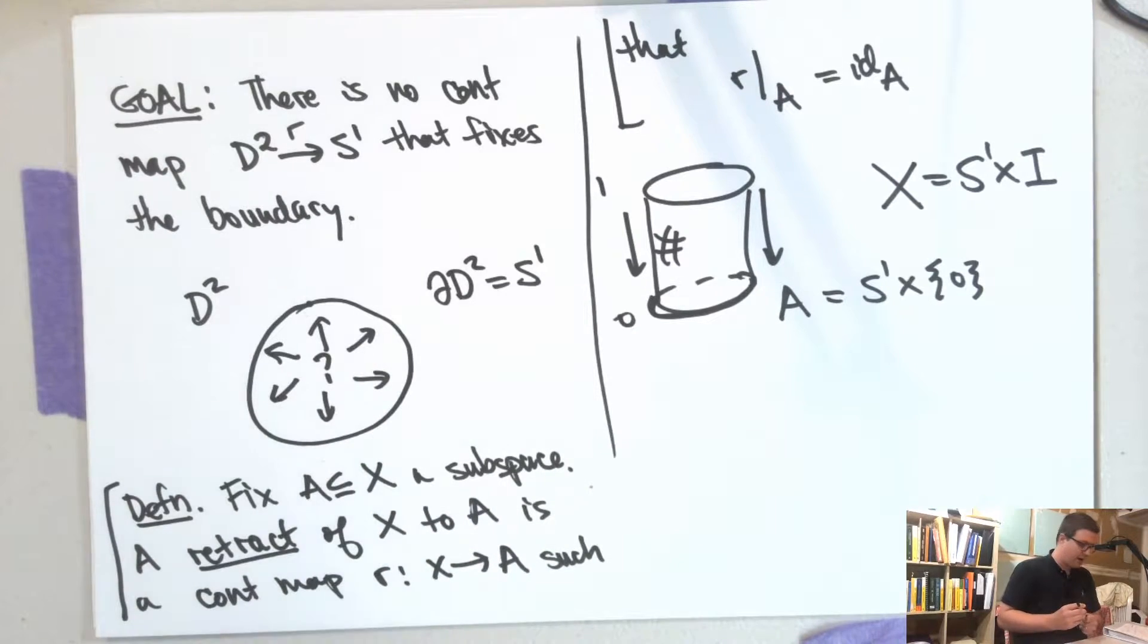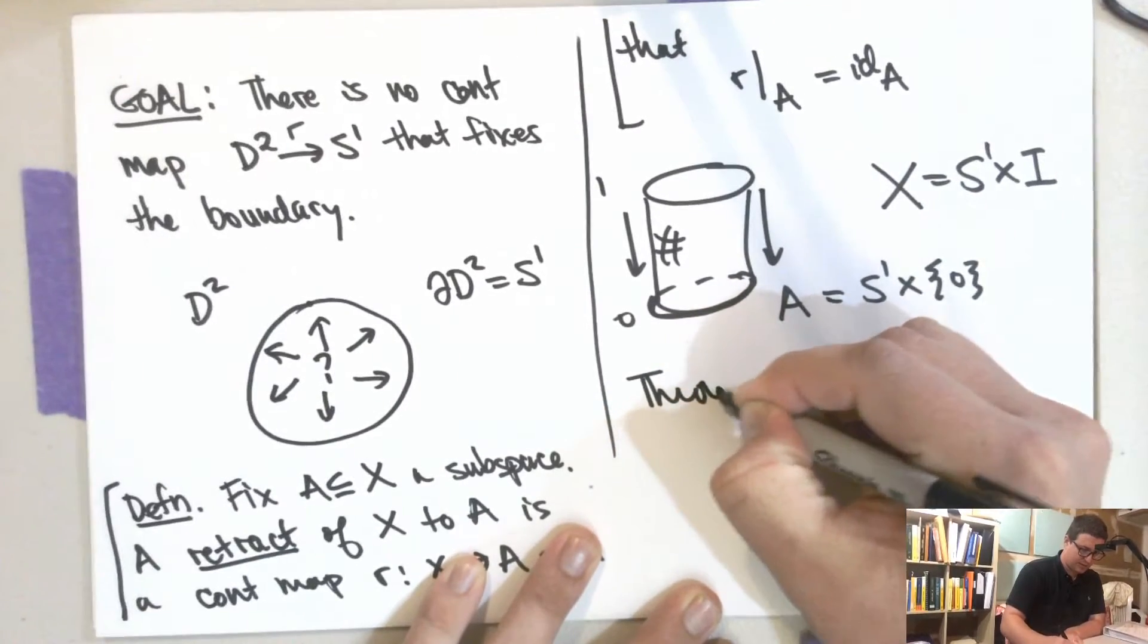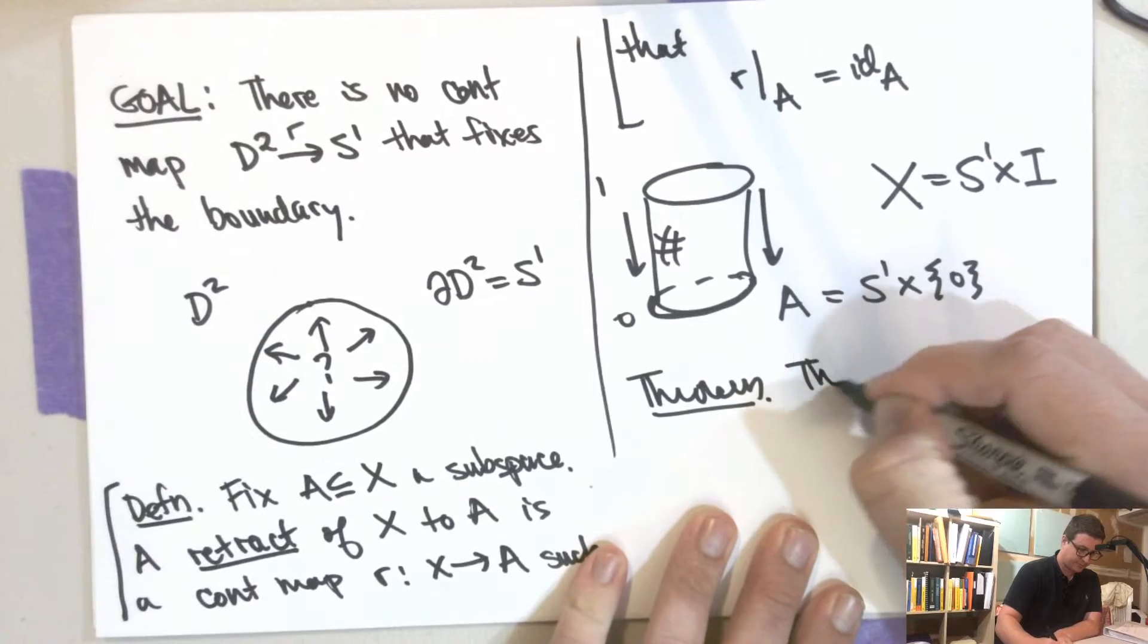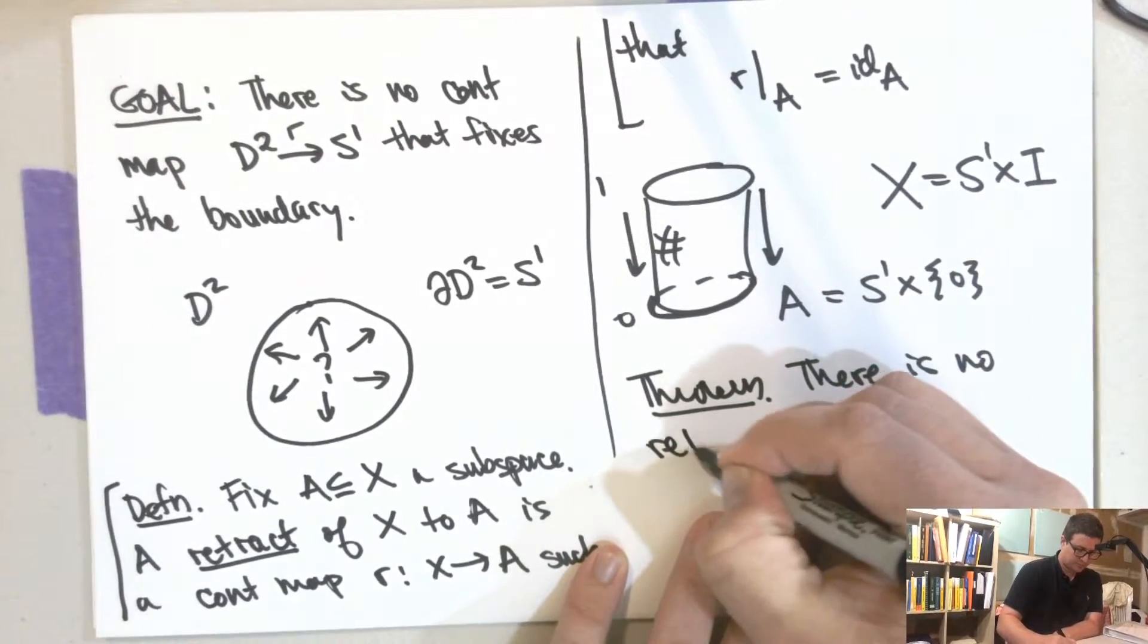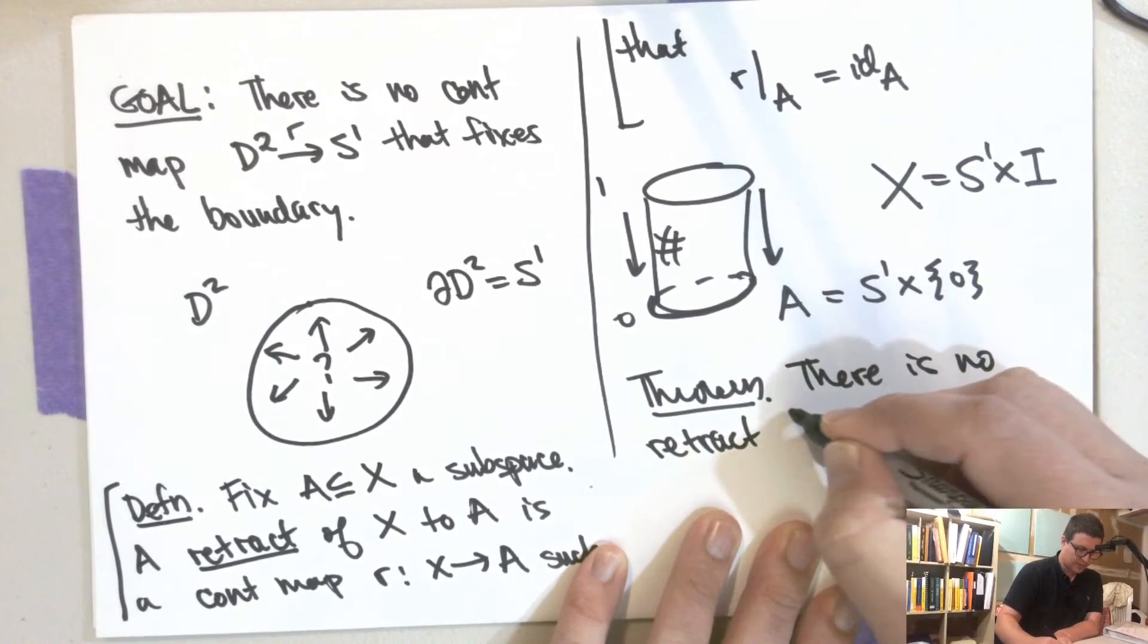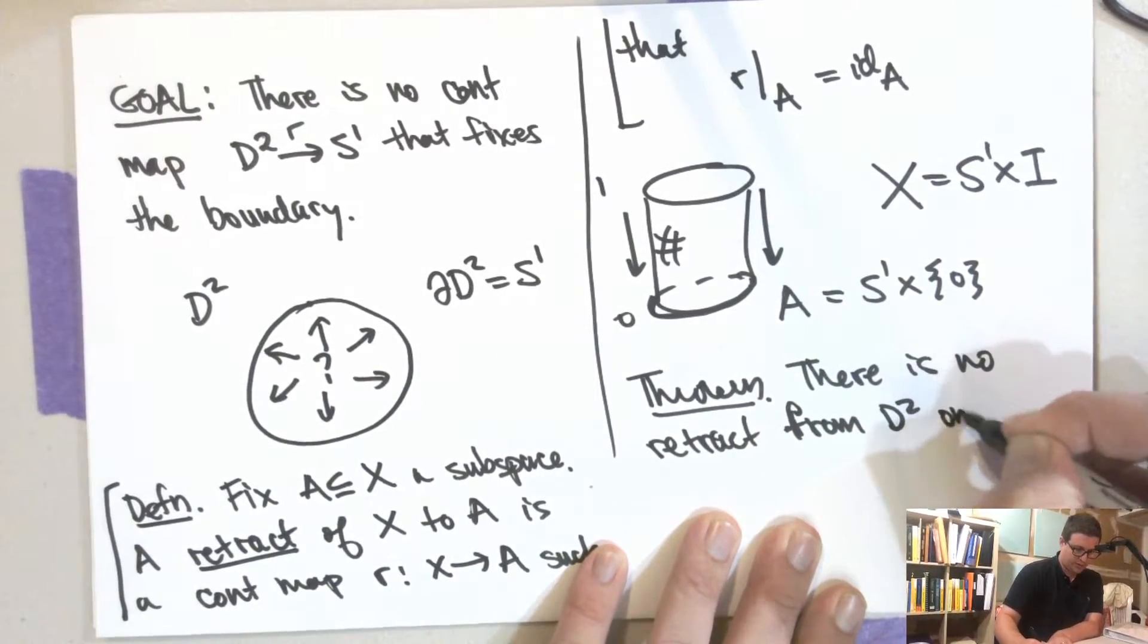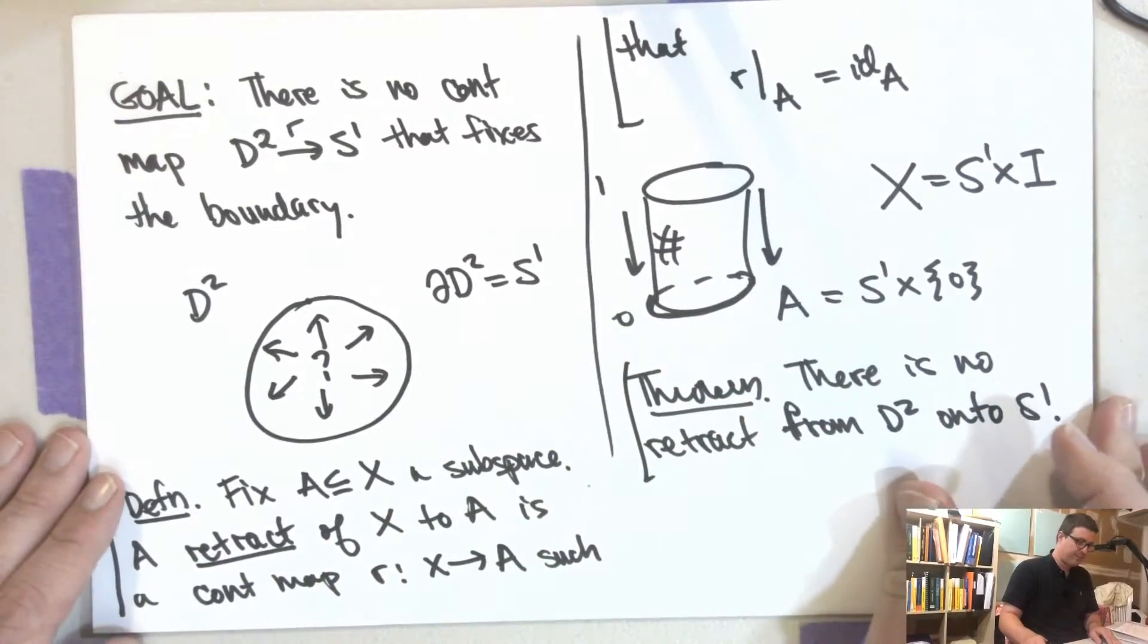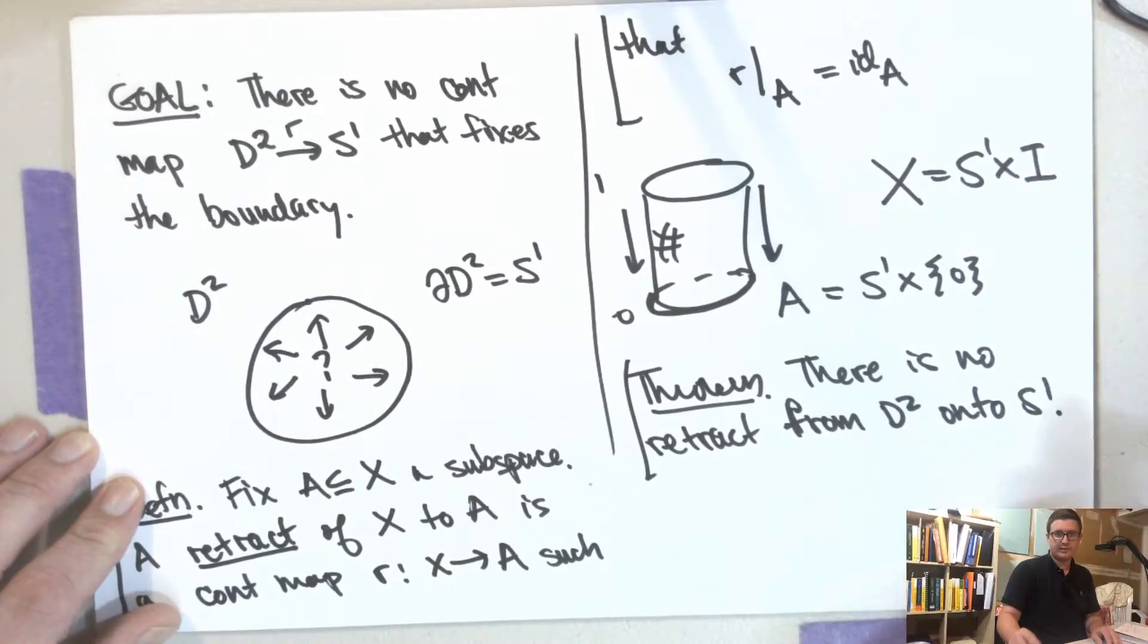So the theorem we want to prove is that there is no retract from D² onto S¹. And so how are we going to do this? So I'm going to kind of give you the idea.